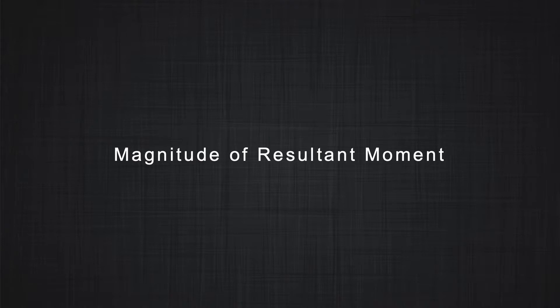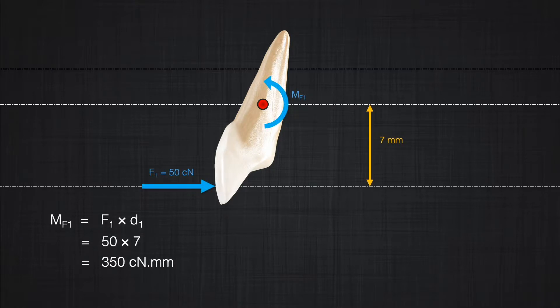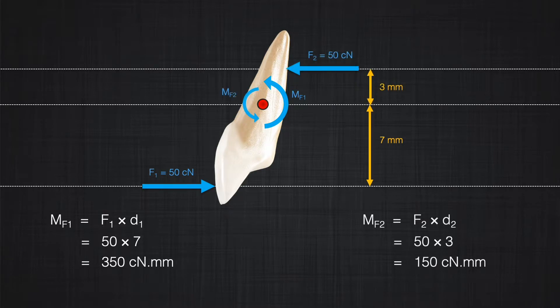The first characteristic of the couple is that the magnitude of the moment produced by the couple is equal to one force times the distance between the two forces. Let's see if this is correct. Assume we apply a force of 50 centinewtons seven millimeters away from the center of resistance. The other force is 50 centinewtons, three millimeters away from the center of resistance. Now we apply the forces at different distances. How much would be the total moment?